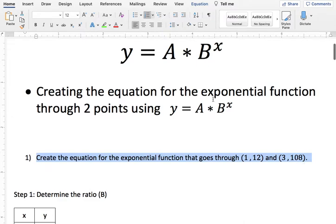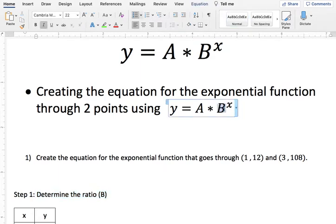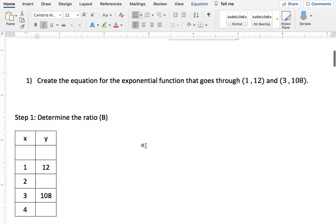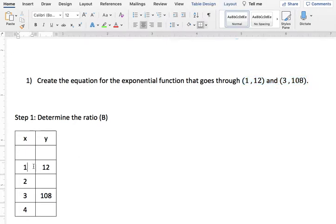So first step, I'm going to find the ratio, which is the letter B. In general, the way I like to start off when I work with exponential functions is I like to create a table for the values. So here you have your (1, 12) and your (3, 108), and I filled in the extra numbers 2 and 4 in between them.